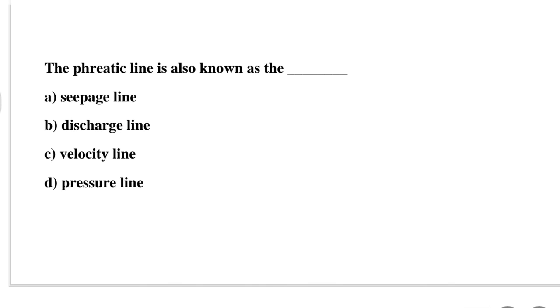Question 22: The phreatic line is also known as — Option A: seepage line, Option B: discharge line, Option C: velocity line, Option D: pressure line. The correct answer is Option A: seepage line.